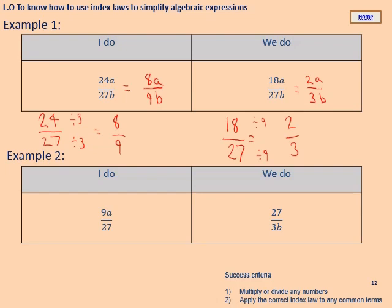For 9a over 27: the difference here is we have a term on the top but not on the bottom. Deal with the numbers first — the highest common factor of 9 and 27 is 9. Divide top and bottom by 9: 9 ÷ 9 = 1, 27 ÷ 9 = 3. We have only an a on the top and nothing on the bottom, so the a stays. Answer: a over 3. Pause the video and then try the 'We do.'